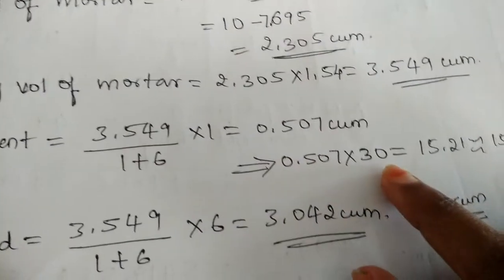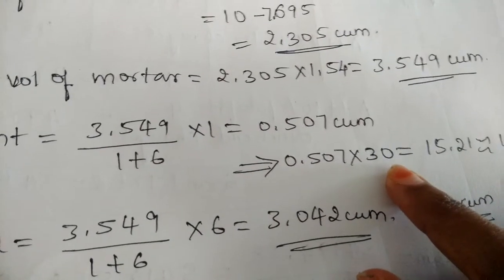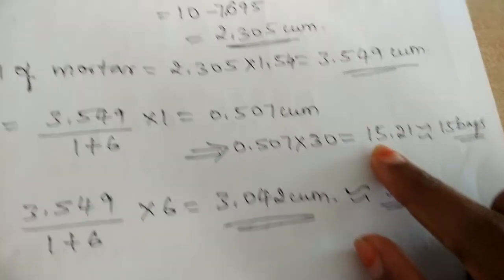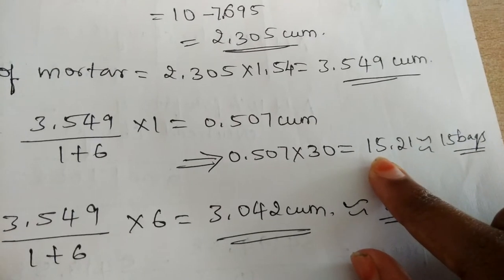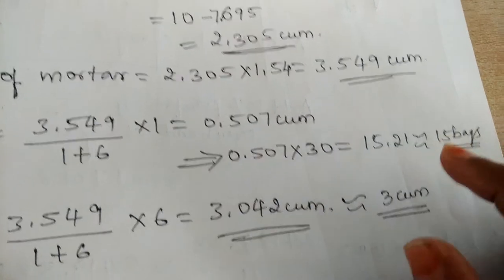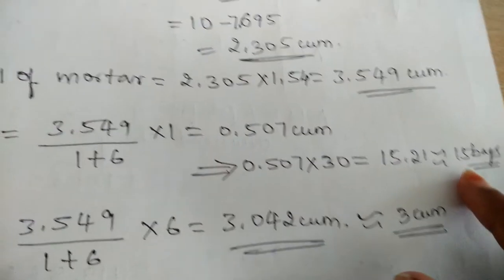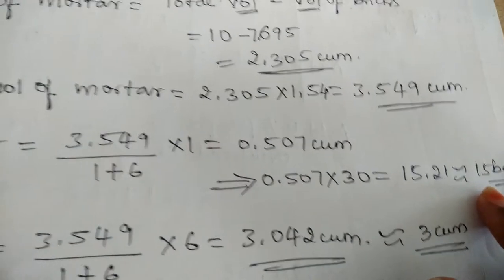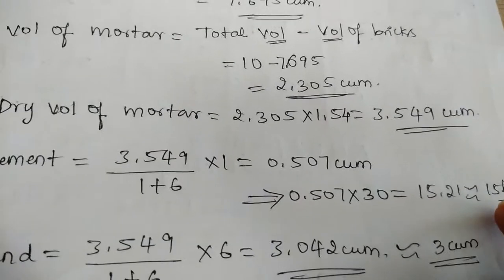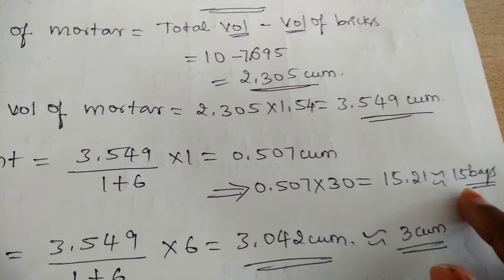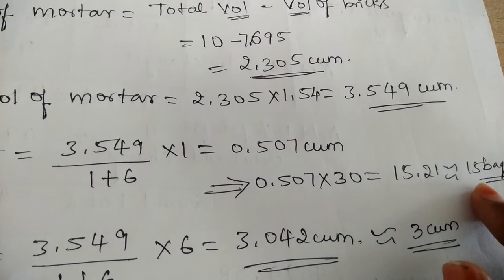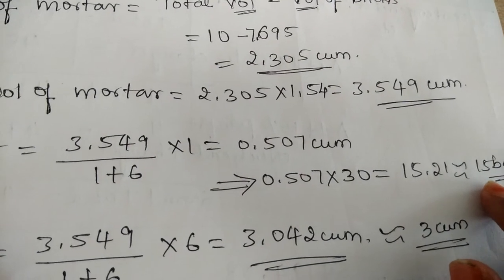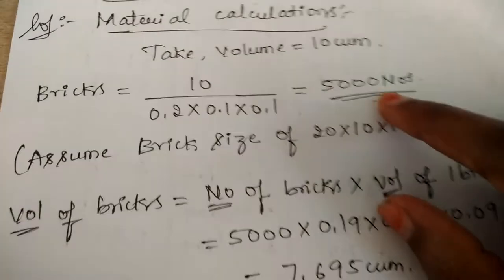On multiplying this with 30 bags per cubic meter, we get the total number of bags as 15.21 — approximately take 15 number of bags. So it requires 15 bags of cement for 10 cubic meter of volume.